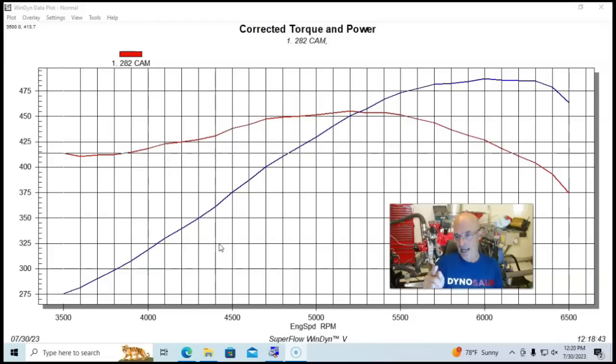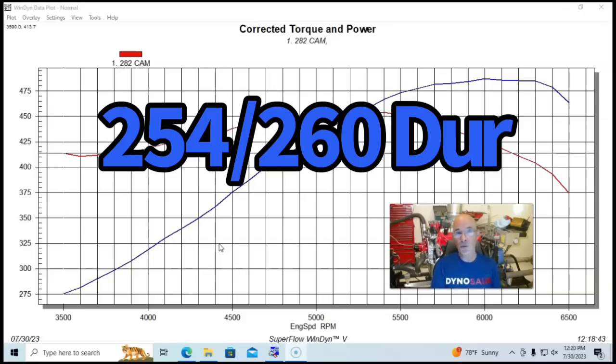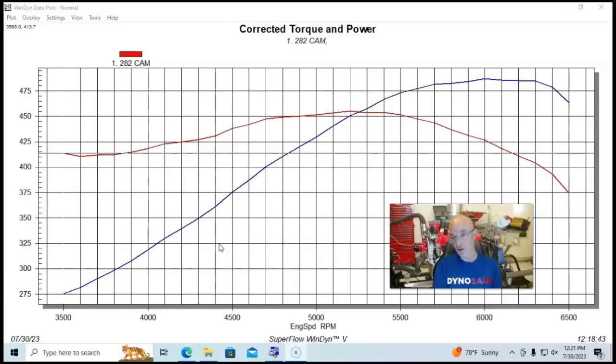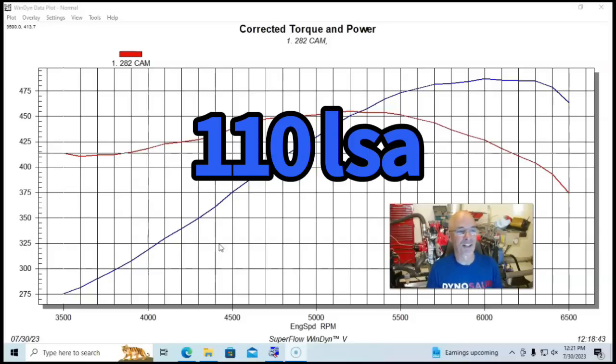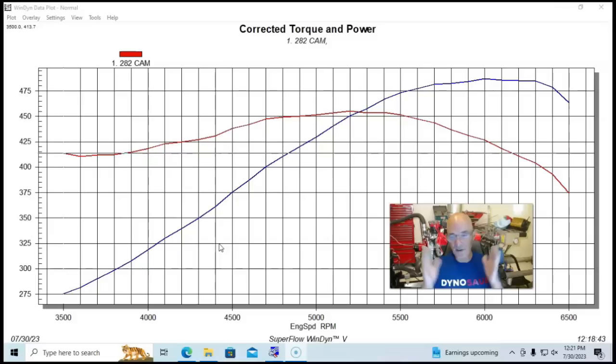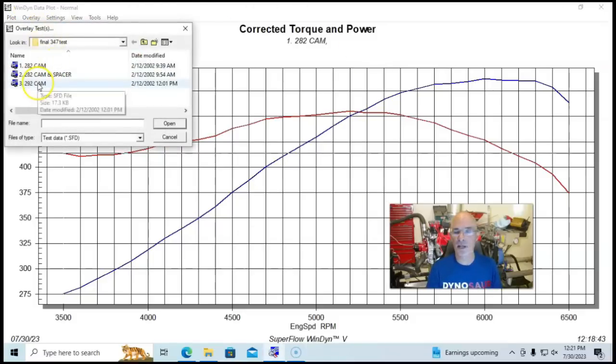The duration was up quite a bit too, 254, 260, pretty good step up in duration. So we know this thing is definitely going to want to run more engine speed and even a tighter LSA for all you LSA guys. This one had 110 degree LSA. So everything about it was basically more in terms of camshaft compared to our 282 hydraulic roller. Let's take a look and see what happened when we installed our camshaft.